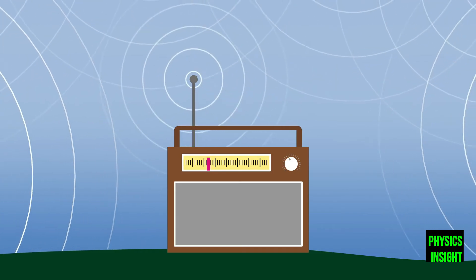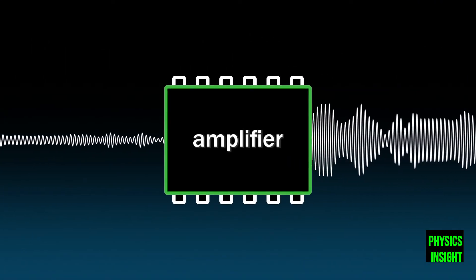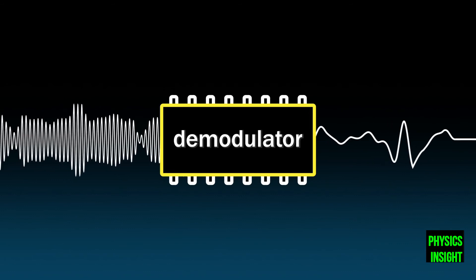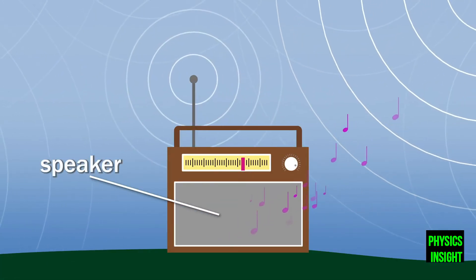The receiver's tuner picks out a specific signal, its amplifier strengthens that signal, a demodulator separates the signal from the carrier wave, and then a speaker converts the signal to the sound waves that you hear.